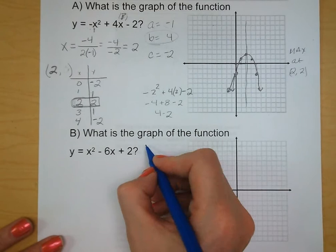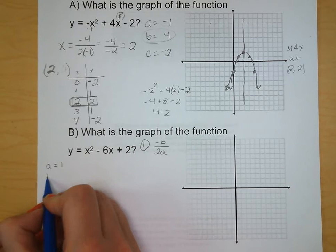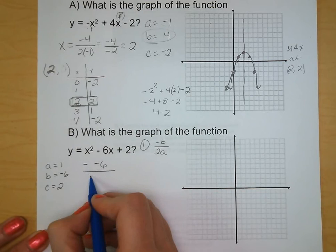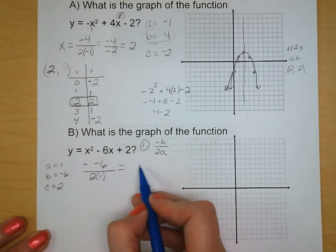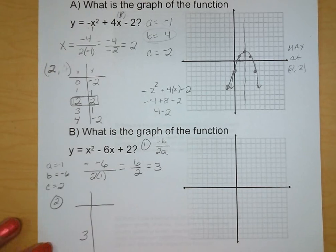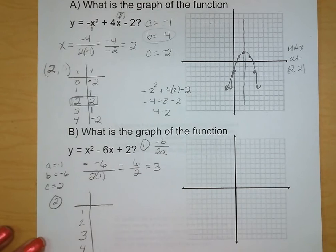So step 1, you have to use your vertex. B is negative 6, and C is 2, and A is 1. The opposite of negative 6 over 2 times A. The opposite of negative 6, positive 6 over 2, which reduces to 3. Now step 2, that 3 goes in the middle of ours. So we go 2 points to the left, 2 points to the right.